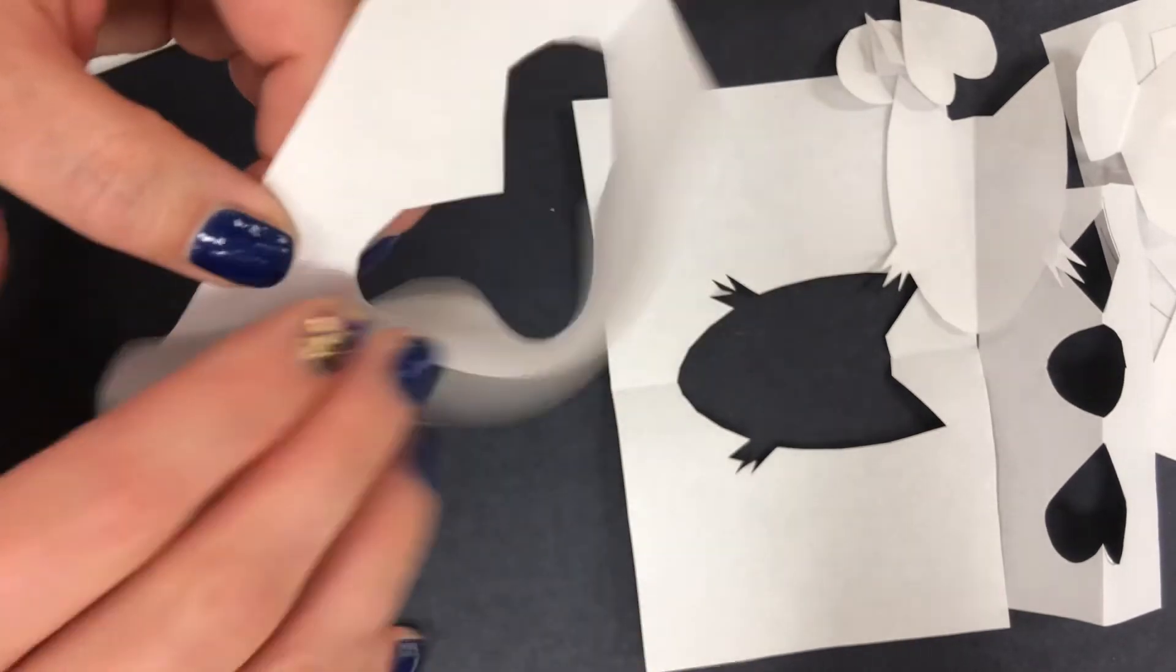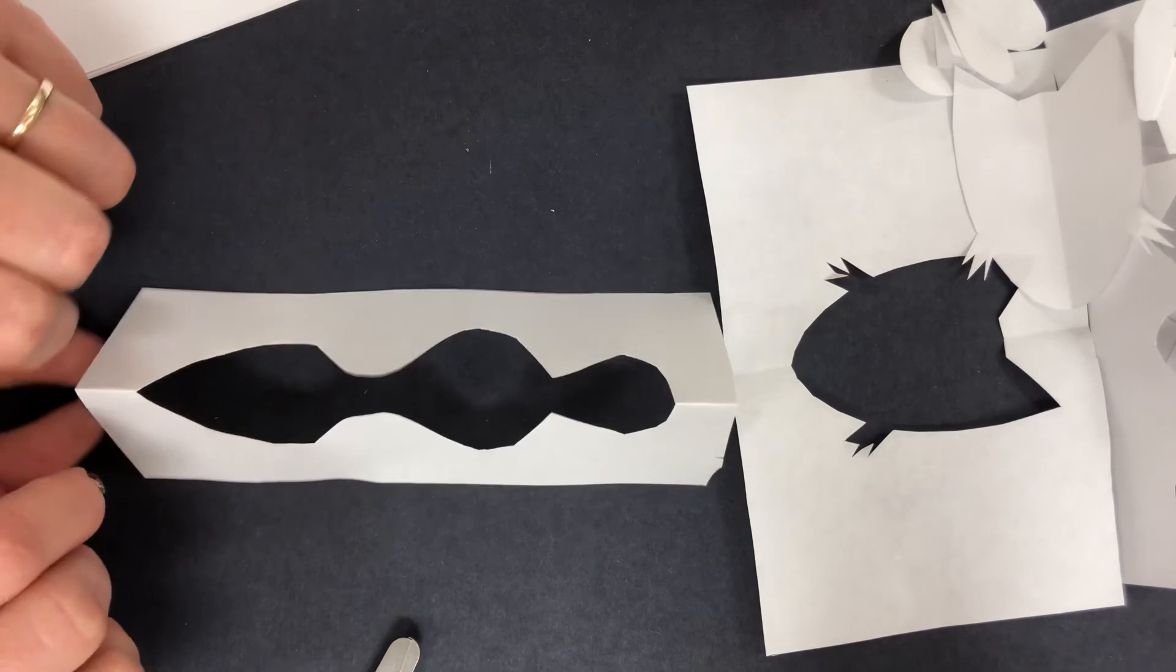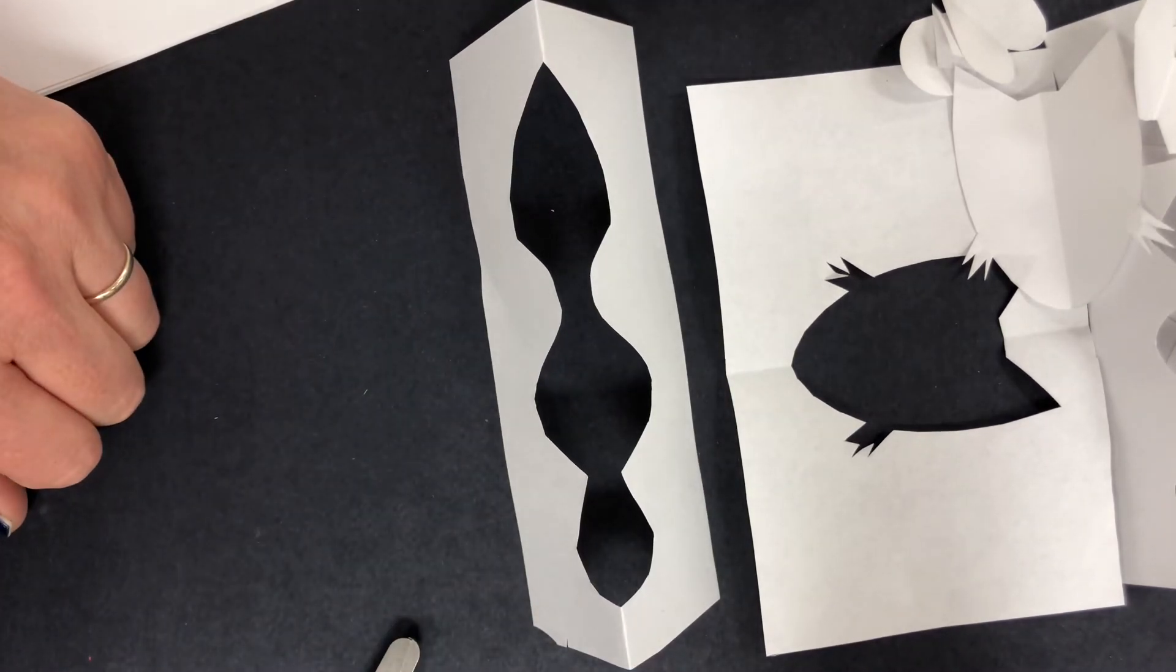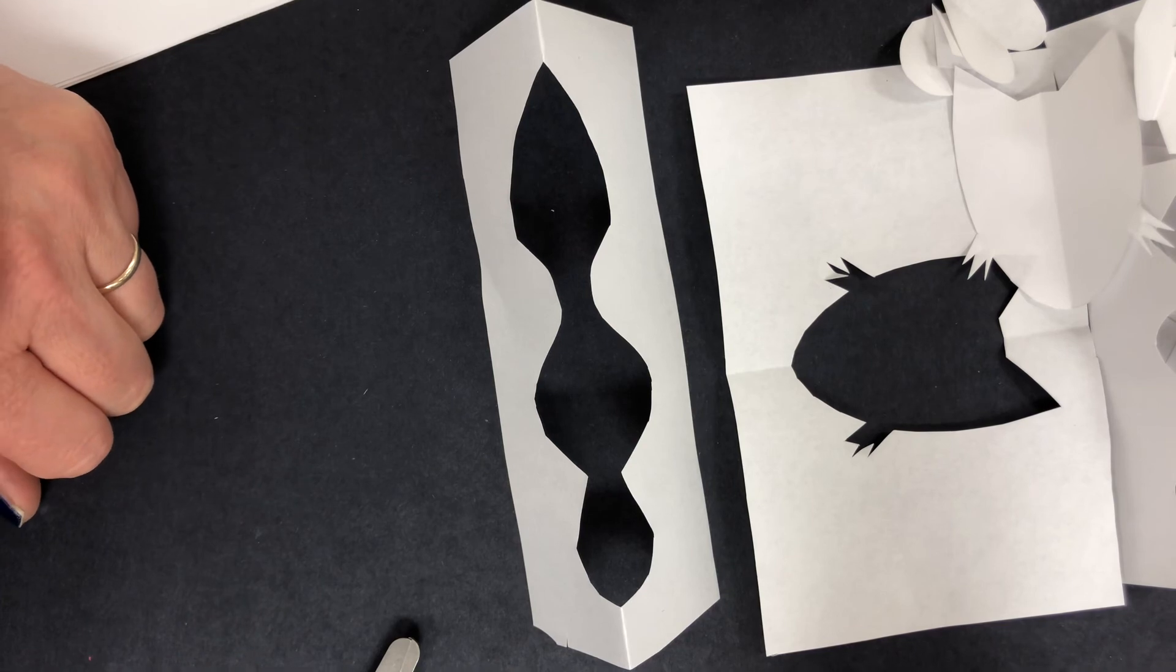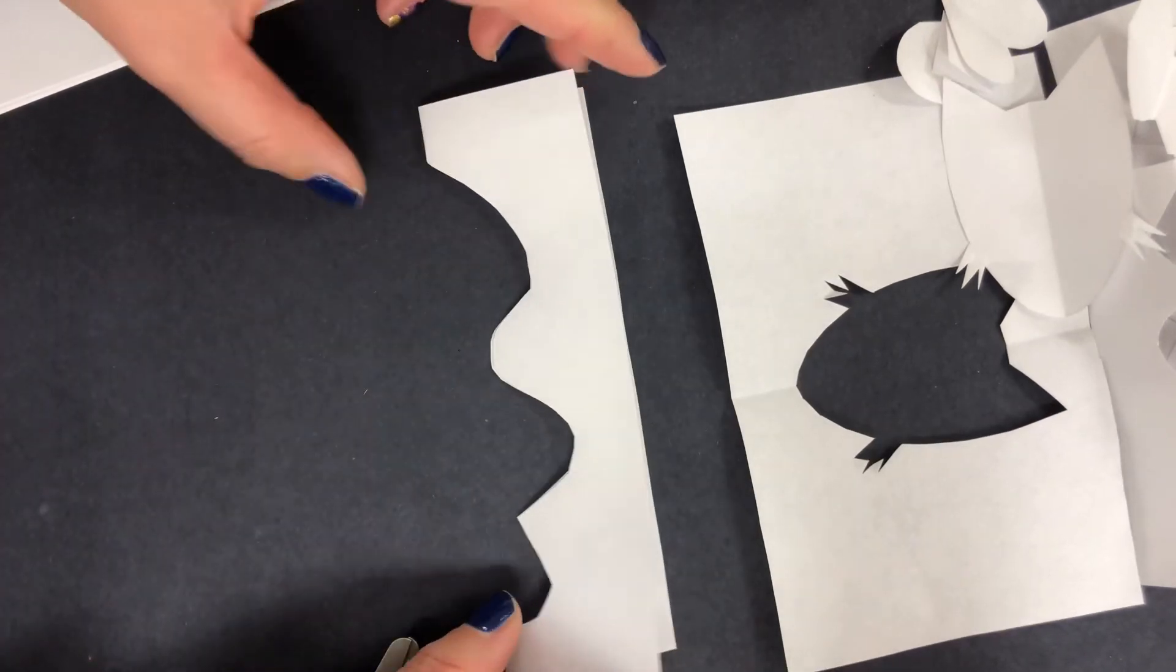But when you open up the paper that you've cut on the fold, you're gonna have a nice design there, and because of the fold it's going to kind of stand up in a 3D way. And that is how you cut on a fold. Fold your paper, find the crease, and cut along the crease or folded side.